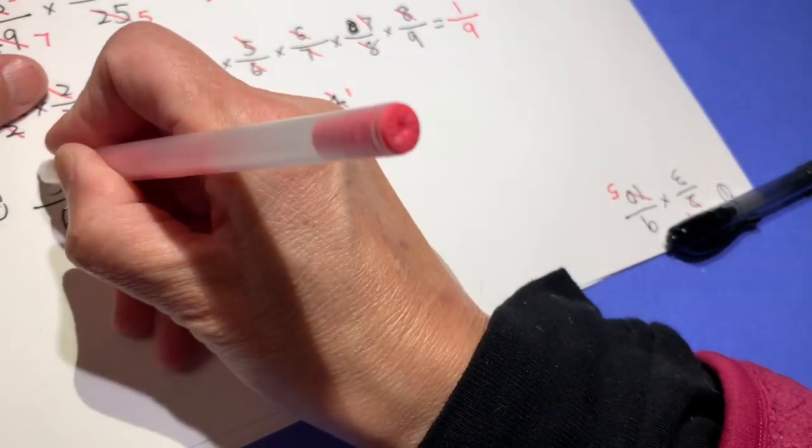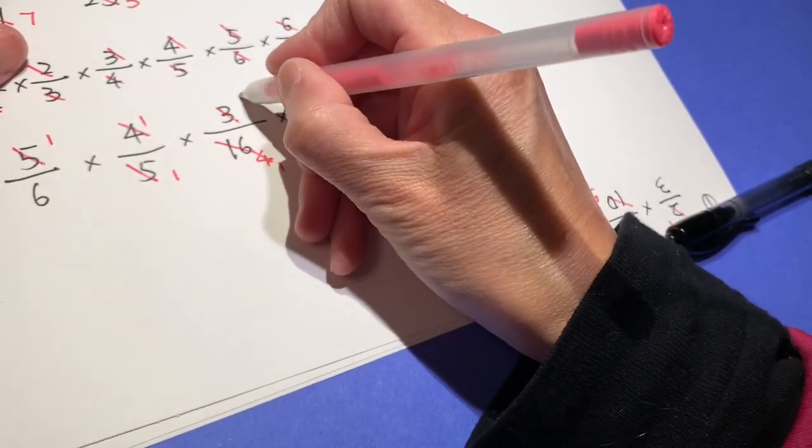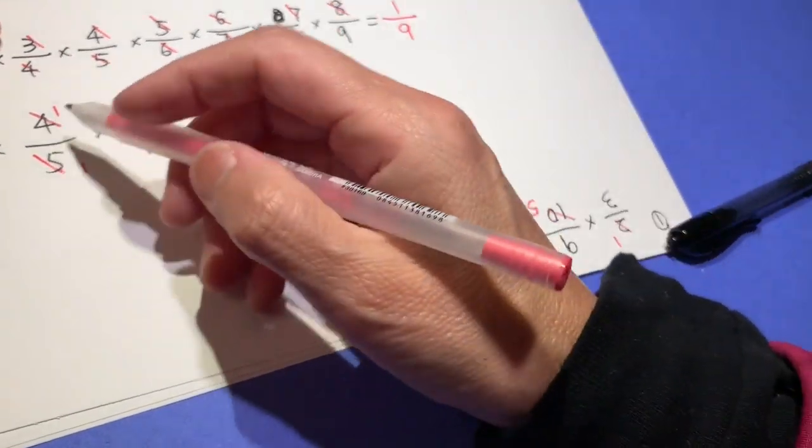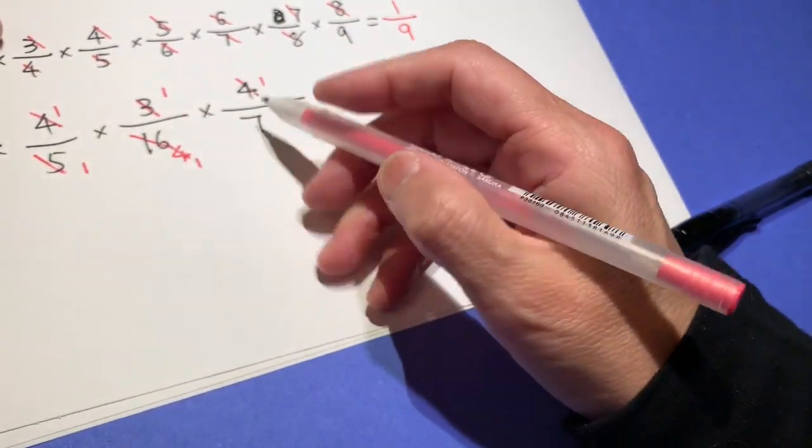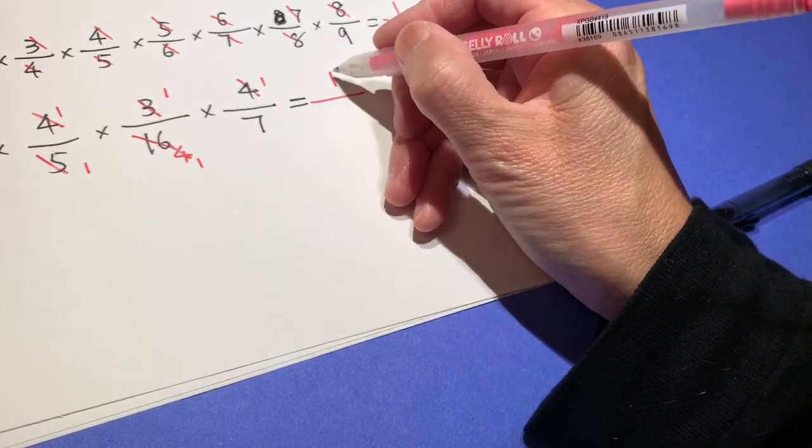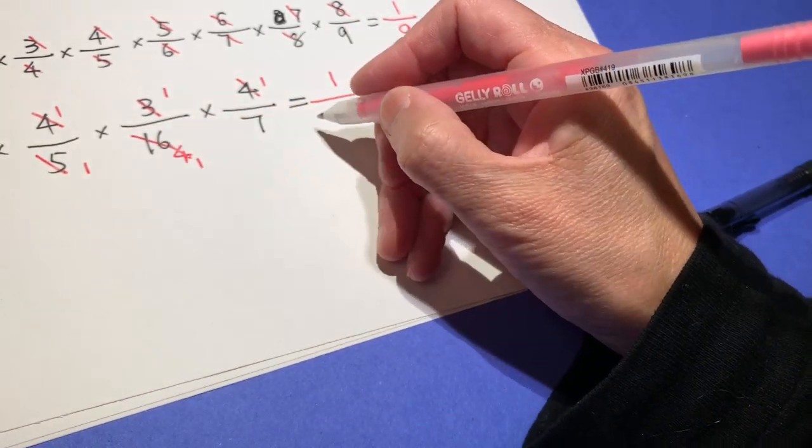5 and 5, both divided by 5. 3 and 6: 1, 2. That is it. 1, 1, 1, 1, 1, 1. 2 and 7. So on the top is 1. On the bottom is 14.